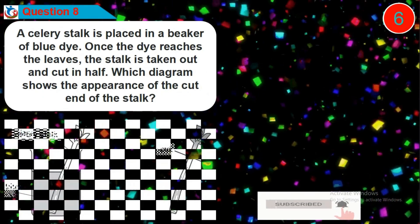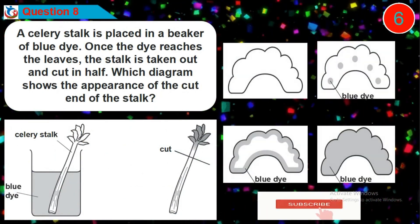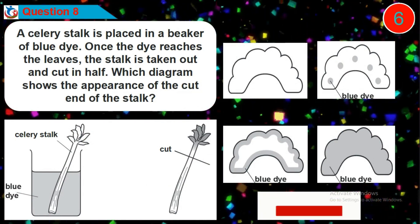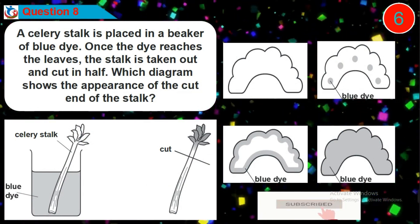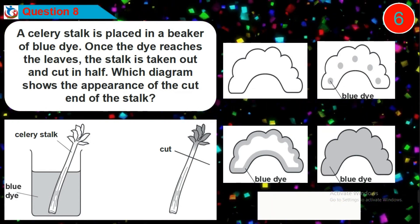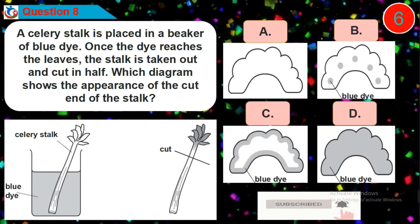Question 8. A celery stalk is placed in a beaker of blue dye. Once the dye reaches the leaves, the stalk is taken out and cut in half. Which diagram shows the appearance of the cut end of the stalk? Is it option A, B, C or D?